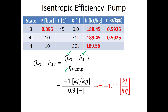That concludes our introduction to isentropic efficiency. In both cases, it's power divided by power — figure out which is bigger and put it in the denominator. You can either fix both sides of the real process and find efficiency, or use a known efficiency to find the real outlet state. See everyone on Wednesday — homework is due tonight. Thanks everyone, bye.